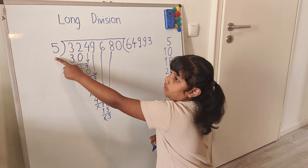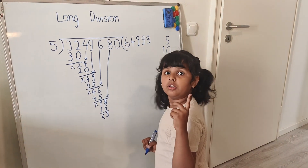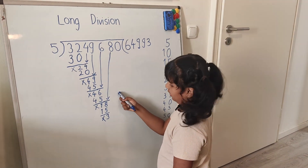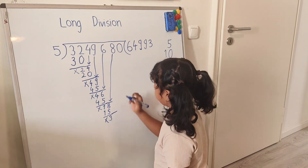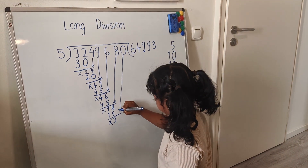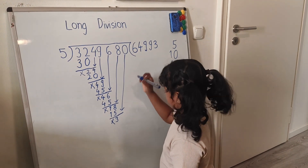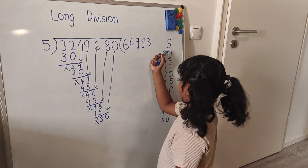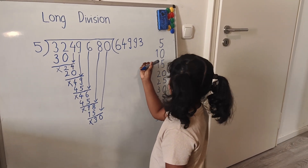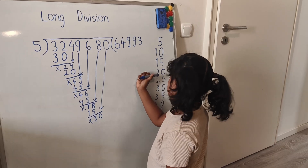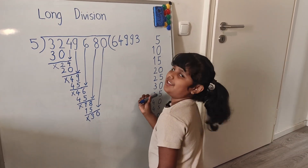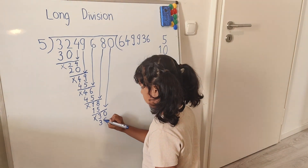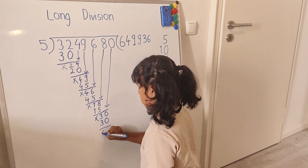So I will take here last number — I will write here 0. Now I will count from the 5 table. Five times 6 is 30, so I will write here 6 and 30. Thirty minus 30 is nothing.